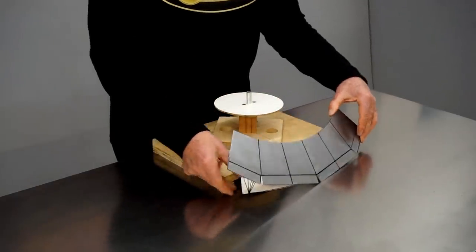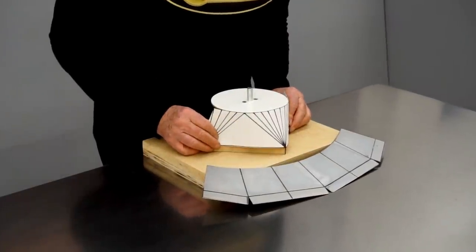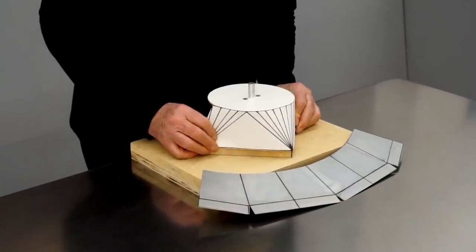So I've drawn radial lines on a piece of paper, and you can see that if a slight bend is made on each of these lines, it will create a bend that matches the form precisely.